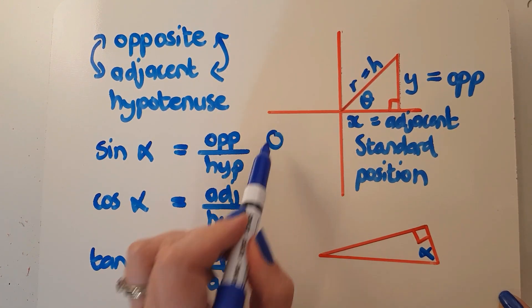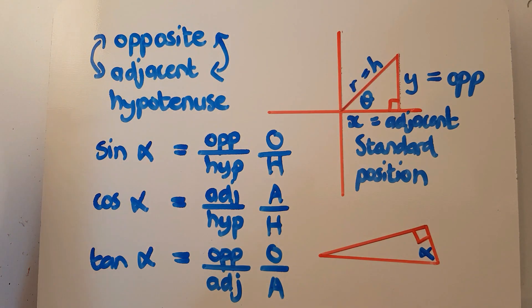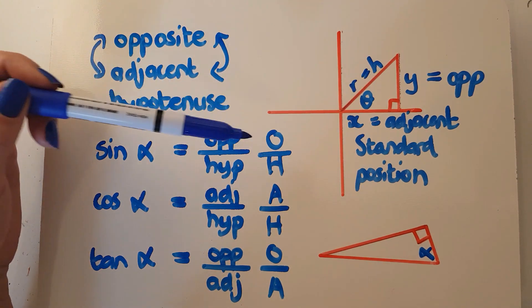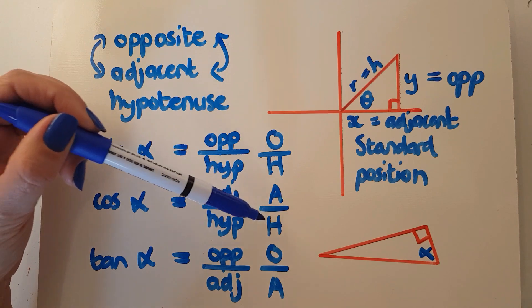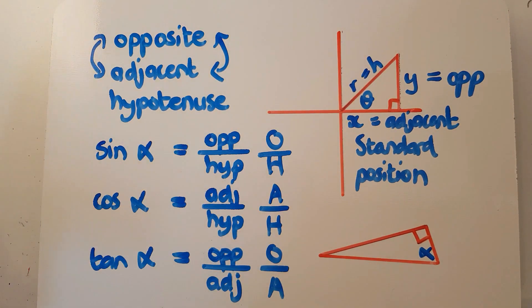So that's o over h, that's a over h, and that's o over a. So the way I was taught to do this was to remember the mnemonic, oh hell, another hour of algebra. And that's how you would use them if you were going to deal with triangles that are not in standard position.